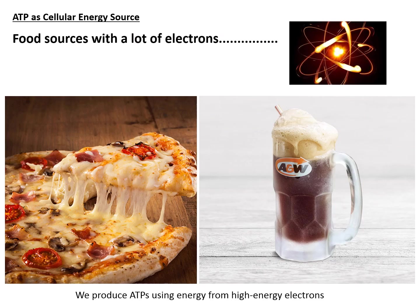Shown here are two examples of food sources with a lot of electrons — pizza with extra cheese and a root beer float. They have a lot of electrons stored in the form of covalent bonds, found in the long fatty acid chains and the sugar molecules, and we can then use that energy to produce many more ATPs.